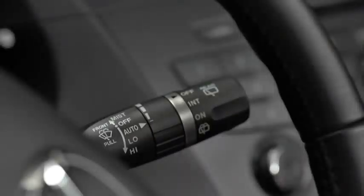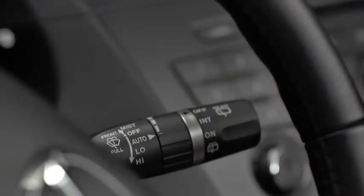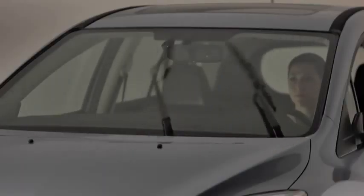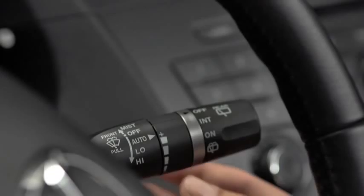For automatic wiping, pull the lever down to auto. When the wiper lever is in the auto position, the rain sensor detects the amount of rainfall on the windshield and turns the wipers on or off automatically.